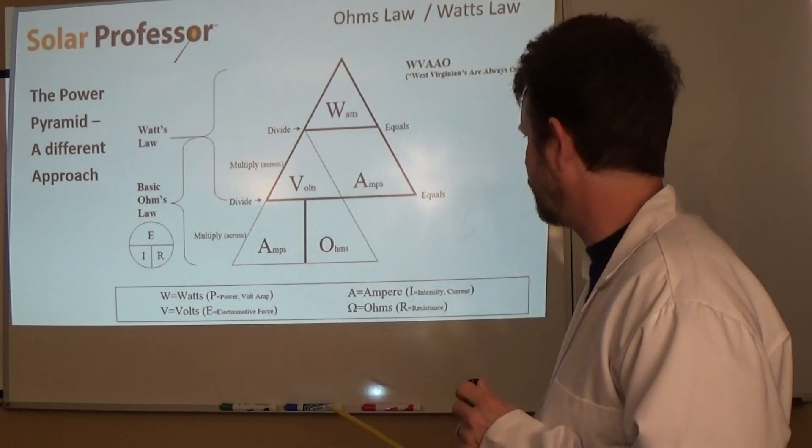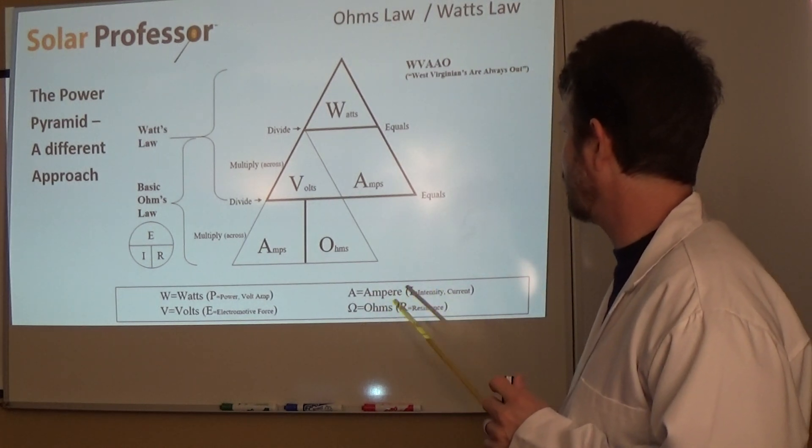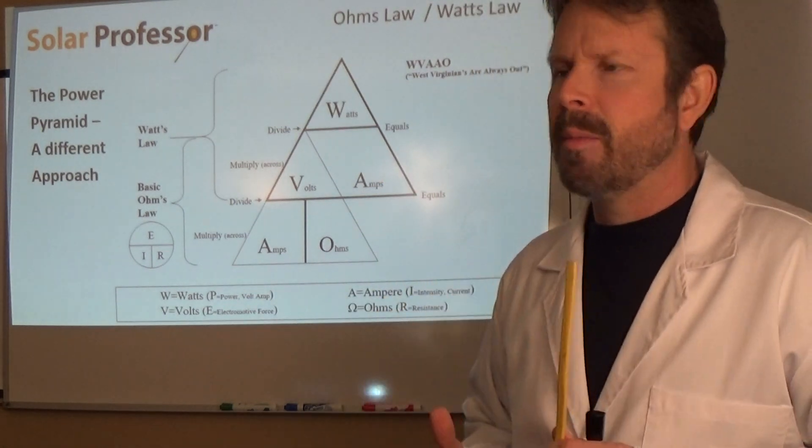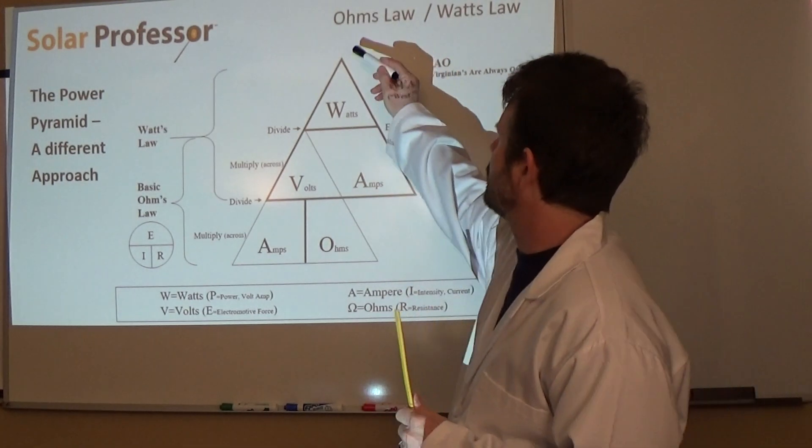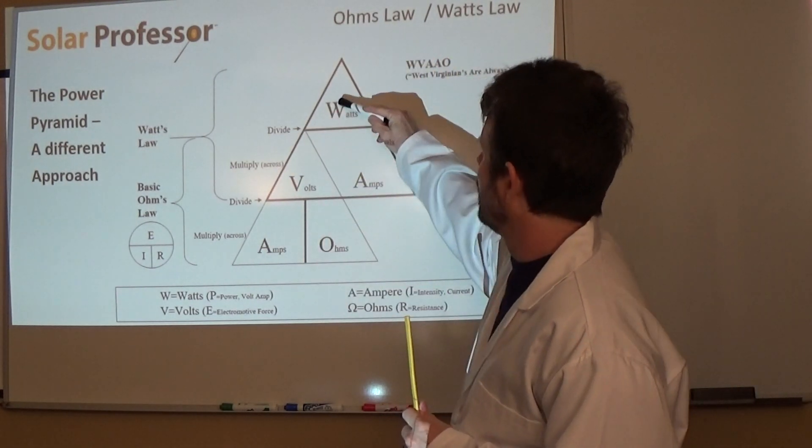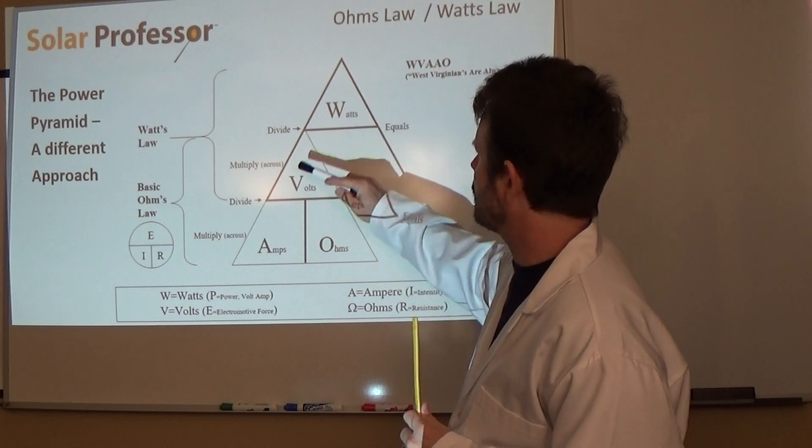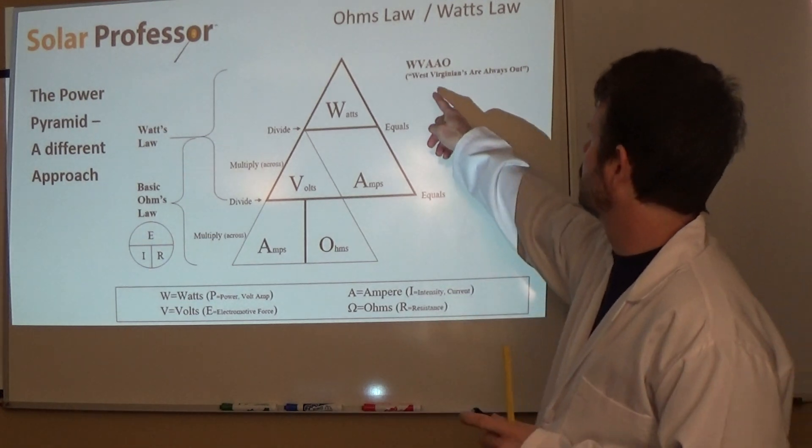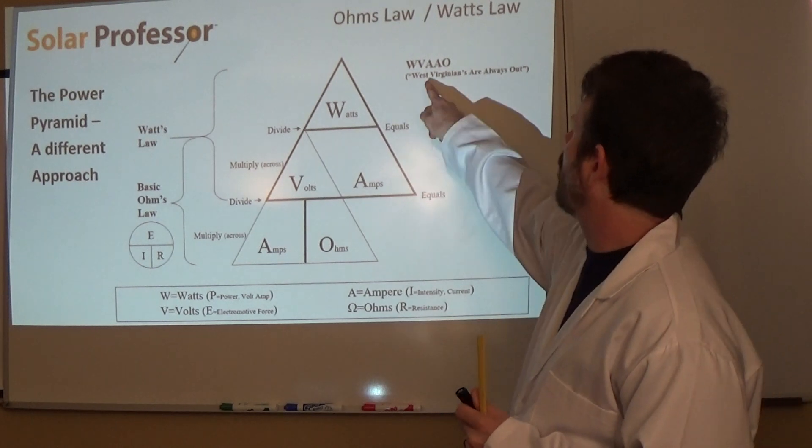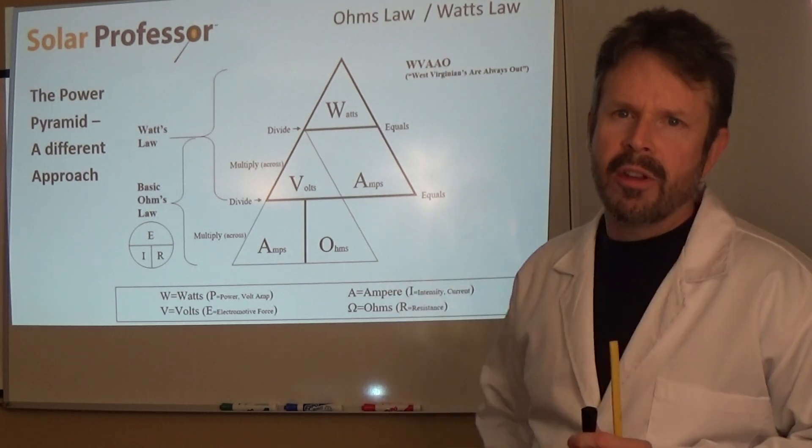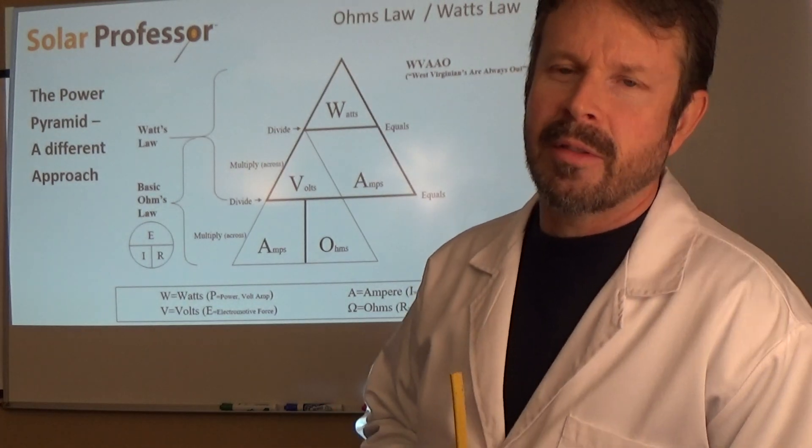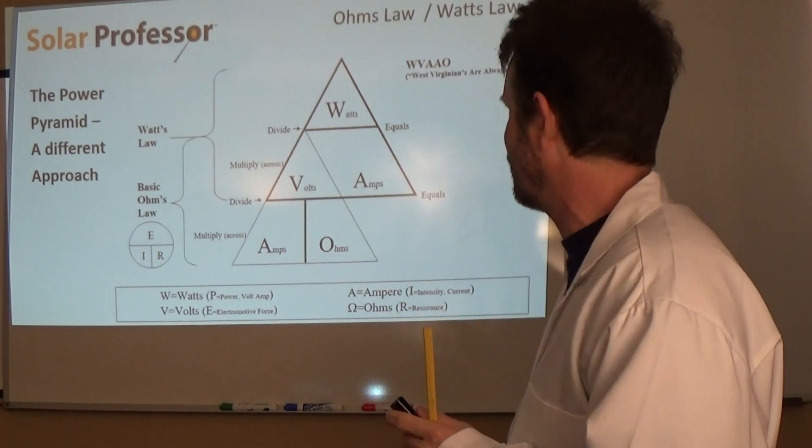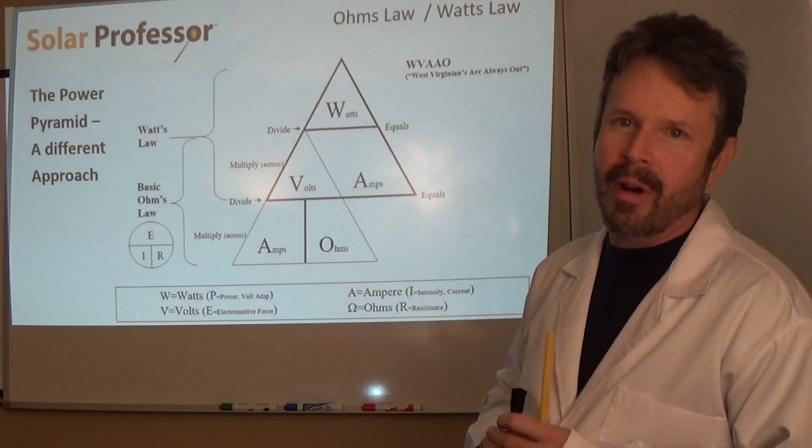Down here I have a key. It's what I just mentioned on the other page. Watts and power is the same thing. Volts and E or electromotive force. A and I, and then, of course, omega and then R. I have, when my students are taking the NABCEP exam, what I have them do is I have them memorize this. It's pretty easy to memorize. You just draw a couple of triangles like this, and then divide them into these sections. So you have watts right there, volts, amps, amps, and then ohms. It makes sort of an acronym. WVAAO, West Virginians are always out. You can come up with your own funny terms. Trust me, some of my students have come up with their own funny terms.